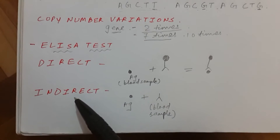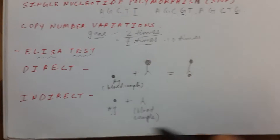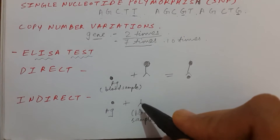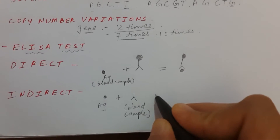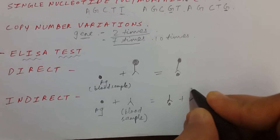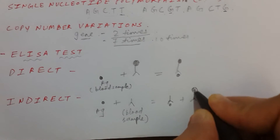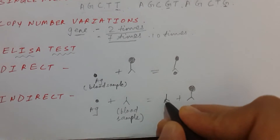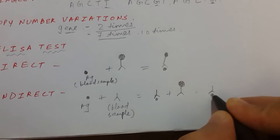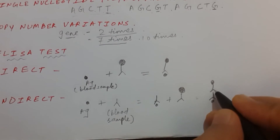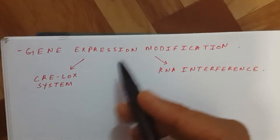In the indirect ELISA test, suppose we want to find antibodies against HIV. We take preformed HIV antigen, then take the blood sample from the patient, which will contain antibodies. When we mix both, an antigen-antibody complex is formed. We then add secondary antibodies that contain enzymes; these secondary antibodies bind to the primary antibodies. If antibodies are present in the patient's blood, this complex will give color or fluorescence due to the enzyme.